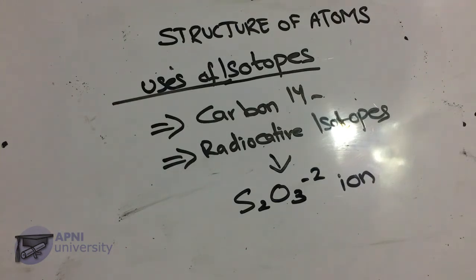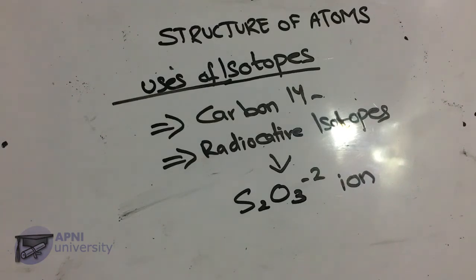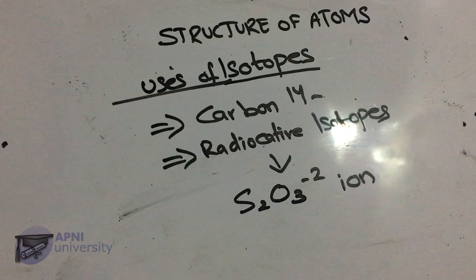Radioactive isotopes are used to determine molecular structure; for example, sulfur-35 has been used in the structure determination of thiosulfate (S₂O₃²⁻). Radioactive isotopes are also used to study the mechanisms of chemical reactions. Additionally, radioactive isotopes are used to date rocks, soil, and geological objects.